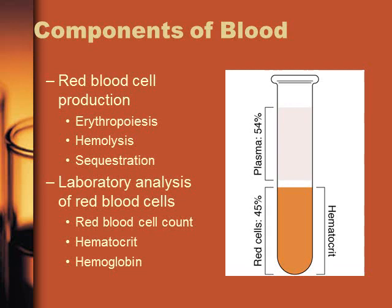Lab analysis of red blood cells includes the red blood cell count — the total number of RBCs — the hematocrit, which is the concentration of cells in blood (normally about 45% red blood cells and 55% plasma), and hemoglobin, which tells us exactly what percentage of that hematocrit is hemoglobin.